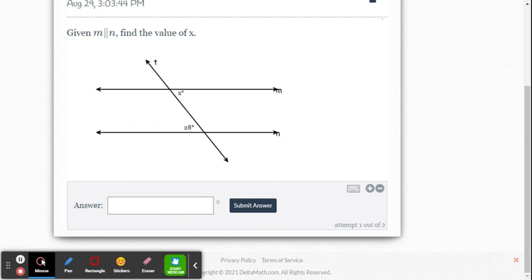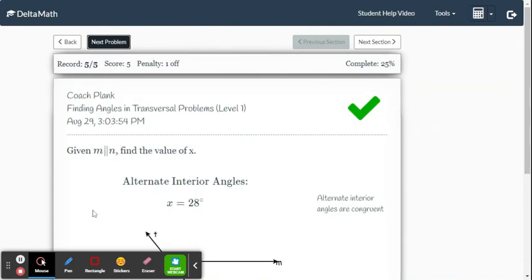And then here we have alternate interior angles. So they are going to be the same measure. They're congruent. So it's 28 degrees. That's it for this level one.